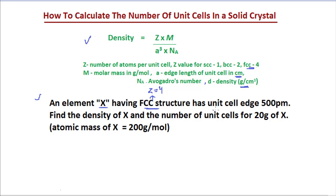The unit cell edge length A is given as 500 picometers. As you can see, in the density formula A is measured in centimeters, but in the problem A is given in picometers. That's why we need to convert picometers into centimeters.